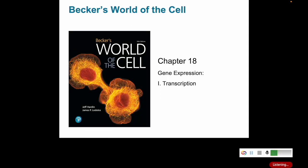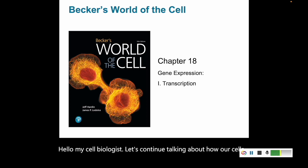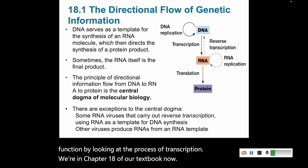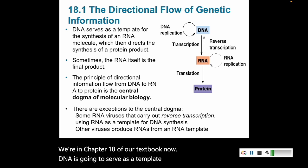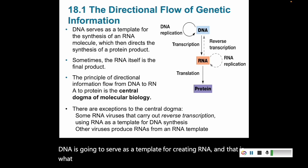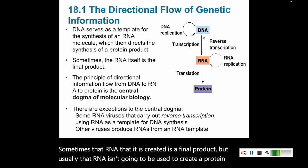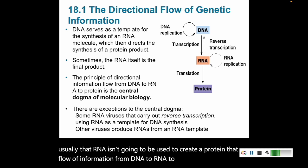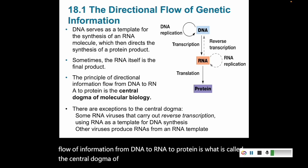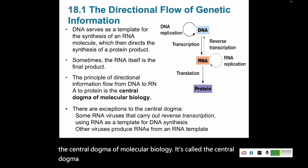Hello my cell biologists. Let's continue talking about how our cells function by looking at the process of transcription. We're in chapter 18 of our textbook now. DNA is going to serve as a template for creating RNA, and that is what transcription is. Sometimes that RNA that is created is a final product, but usually that RNA is then going to be used to create a protein. That flow of information from DNA to RNA to protein is what is called the central dogma of molecular biology. It's called the central dogma because it is centrally important to how molecules are made and function in cells.